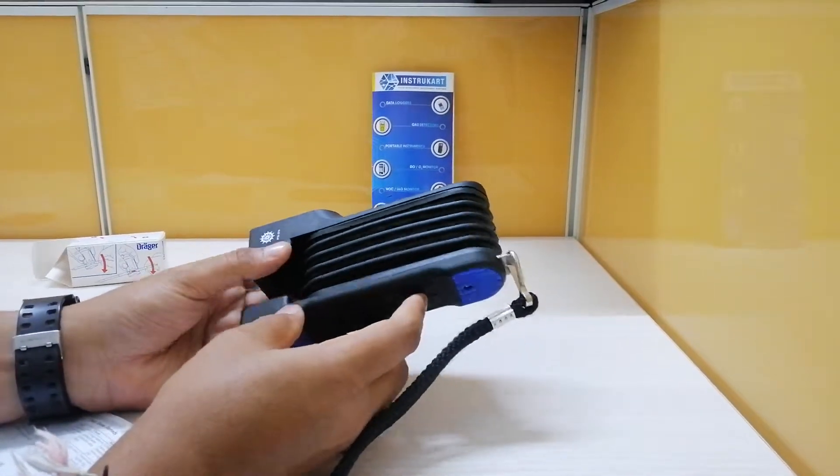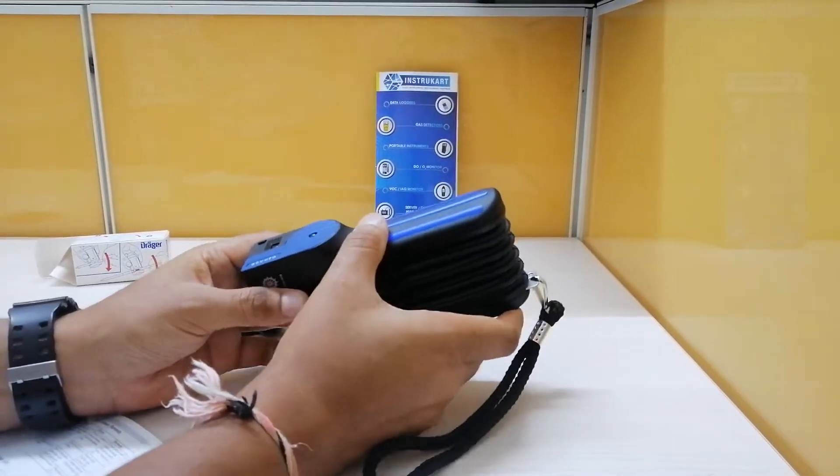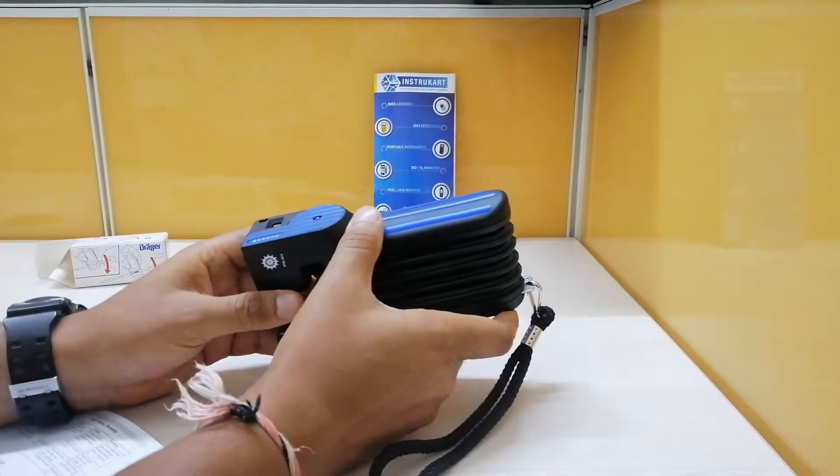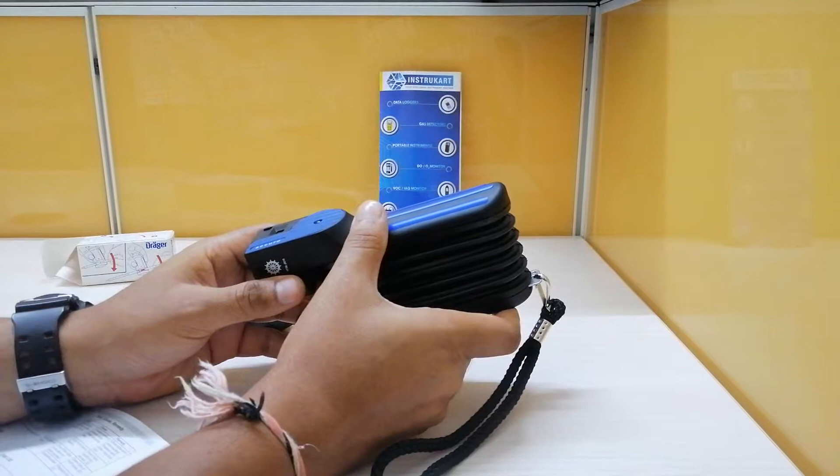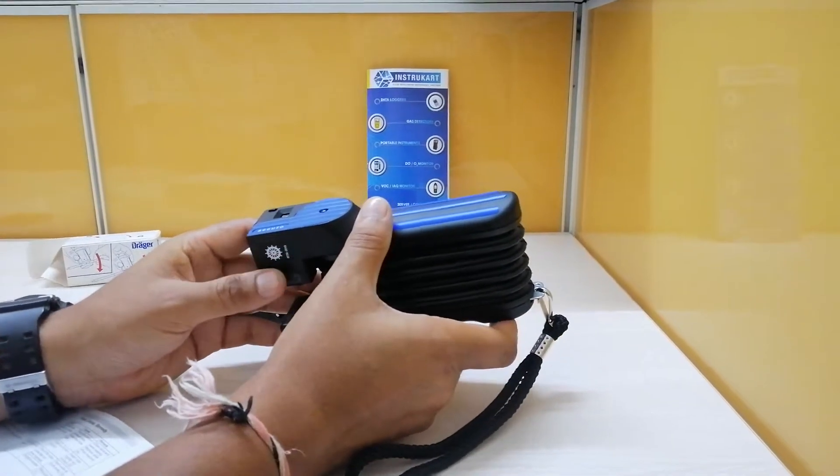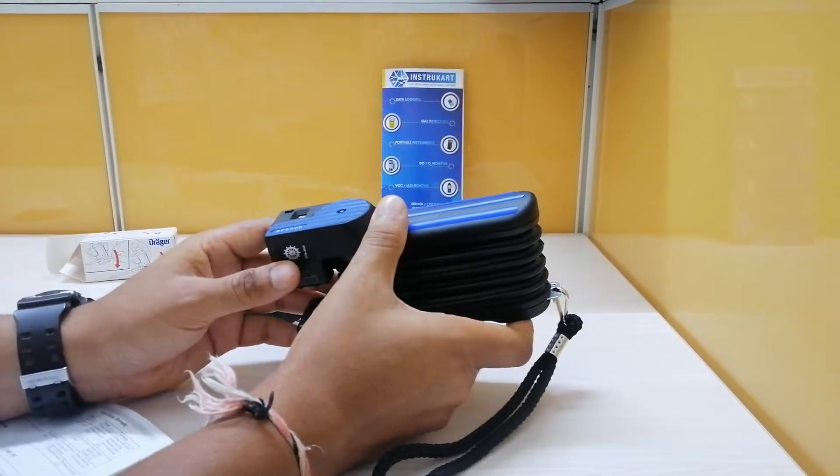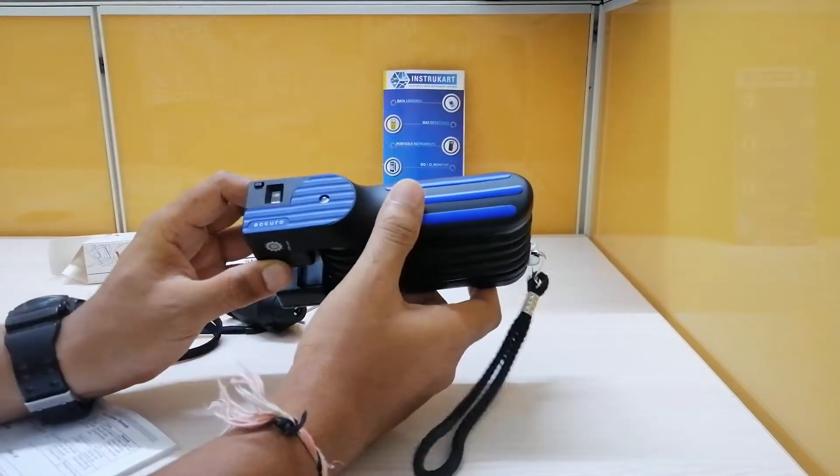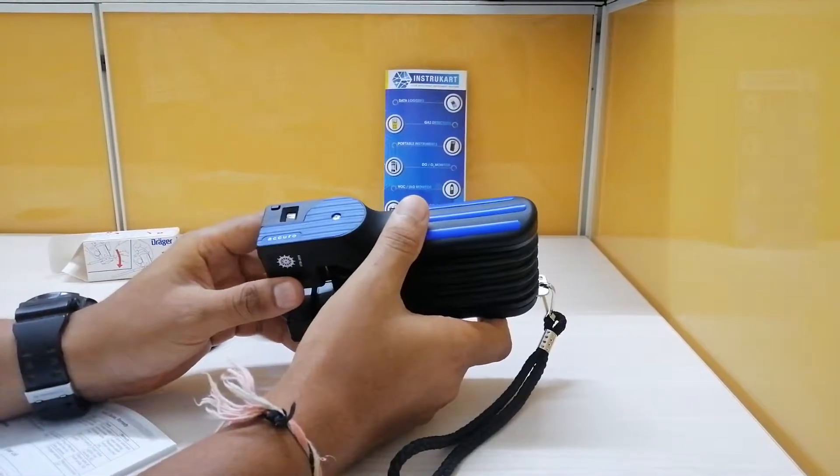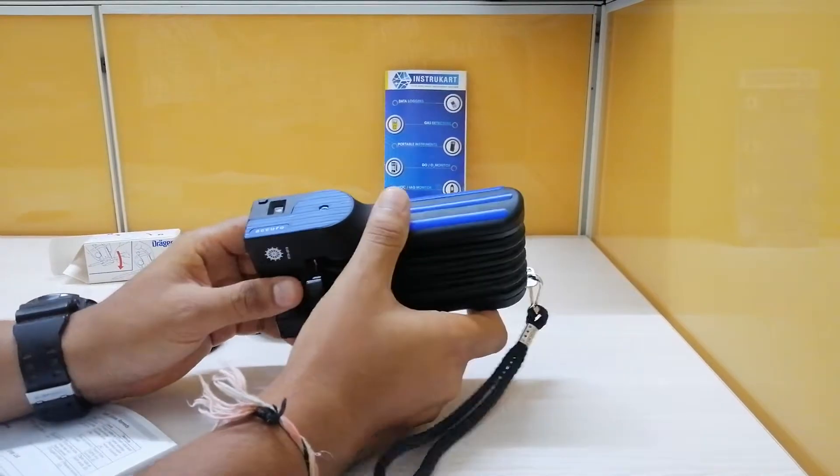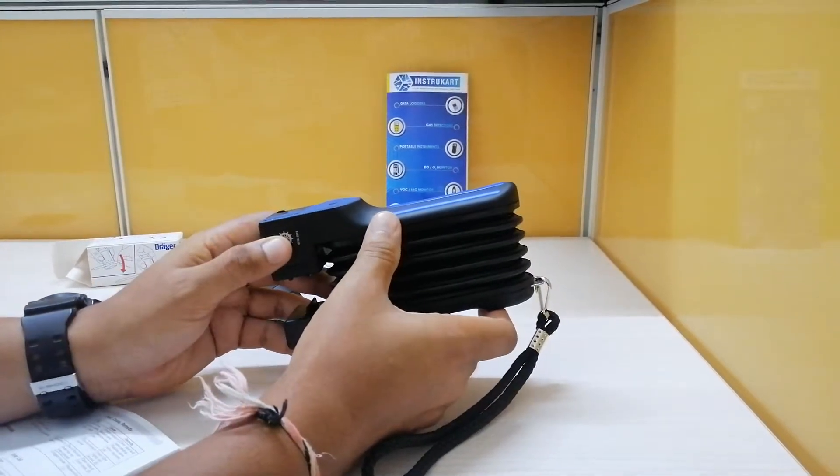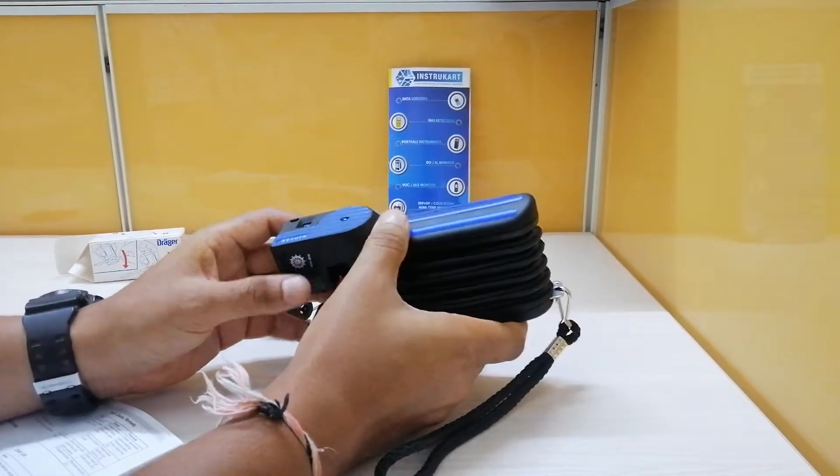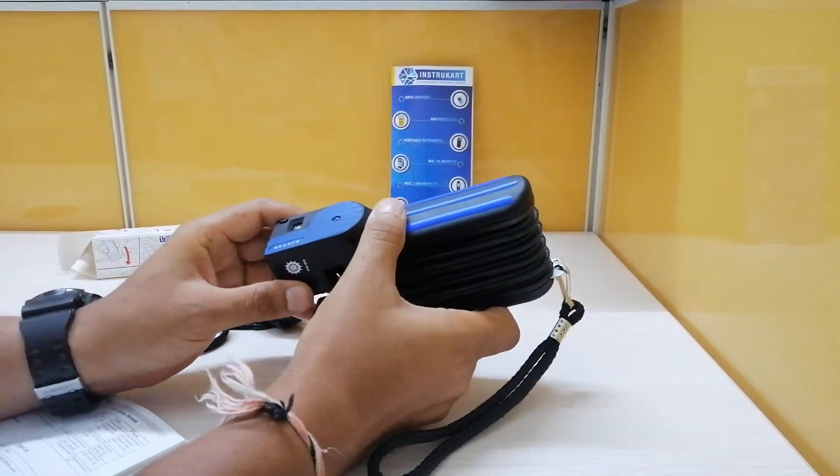This Draeger pump is used along with the tubes. The working principle is that a calibrated 100 ml sample of the air is drawn through the tube with the Draeger Accura series bellow pump. If the targeted chemical is present, the reagent in the tube changes color and the length of the color change indicates the measured concentration.